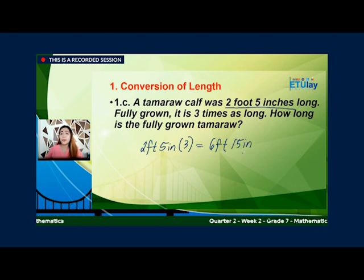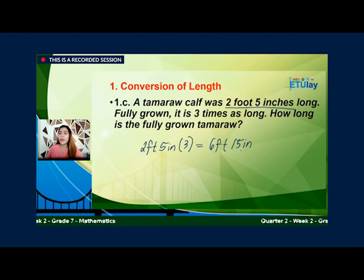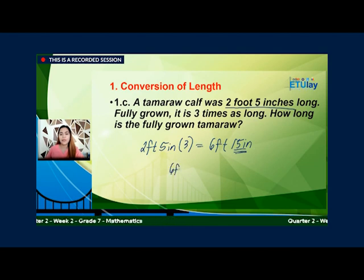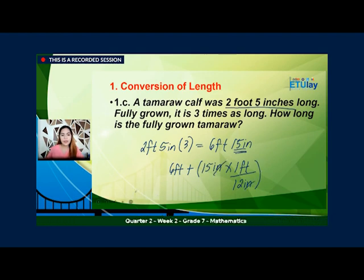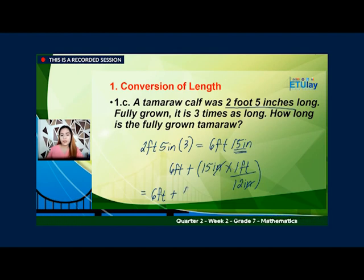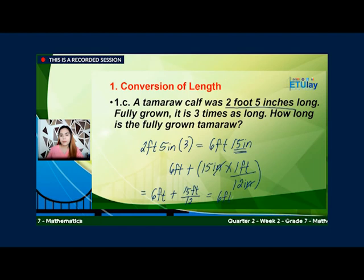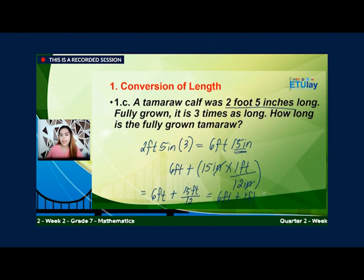Mapapansin nyo, si 15 inches, makakabuo na rin tayo dito ng isang foot, kasi ang 1 foot ay equivalent kay 12 inches. So 15 inches, meron na tayong mabubuo ditong 1 foot. All we have to do is to convert this 15 inches into feet. So we have 6 feet plus 15 inches times 1 foot over 12 inches. Cancel out si inches. So now we have 6 feet plus 15 feet over 12, which is 1.3 — so makakabuo tayo ng 1 foot, then 3 inches.